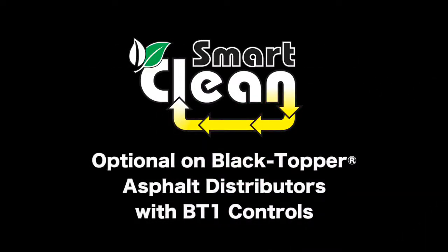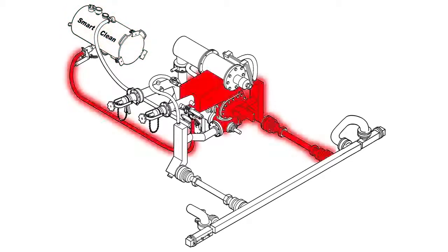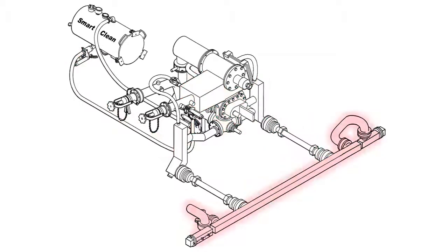The Etnaier SmartClean is an optional value-added component to the Black-Topper asphalt distributors with BT1 controls. SmartClean is an automatic closed system which pulls flushing solvent from the SmartClean tank, pumps it through the circulating system and spray bar, and returns the solvent to the SmartClean tank.